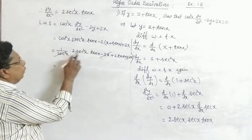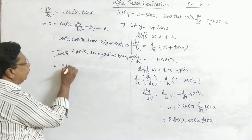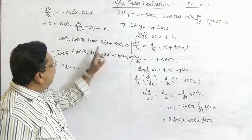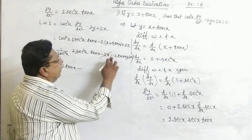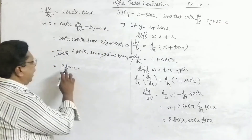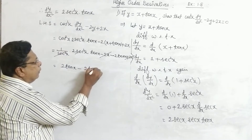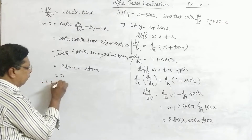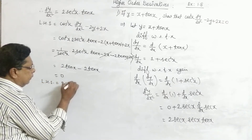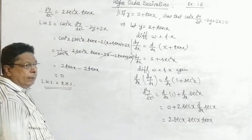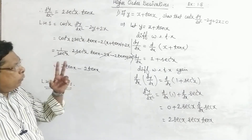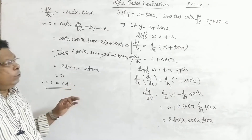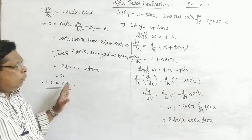After simplification: 2·tan(x) minus 2·tan(x) equals 0. Therefore LHS equals RHS. Hence we have proved cos²x · d²y/dx² minus 2y plus 2x equals 0.